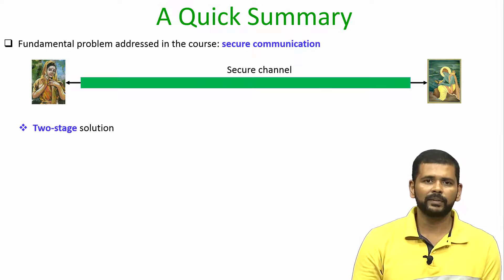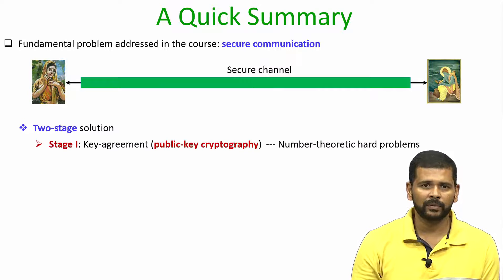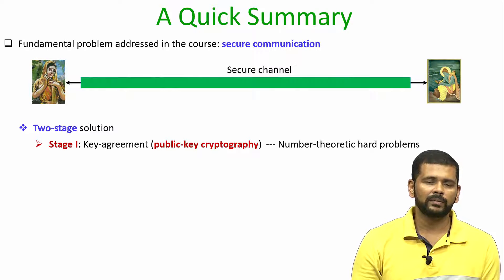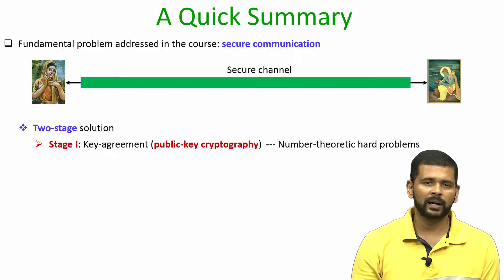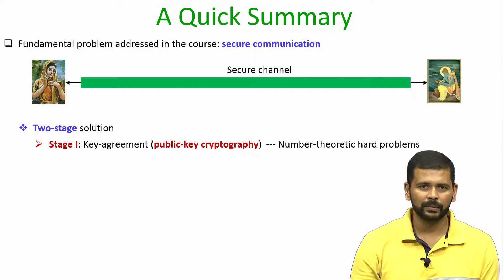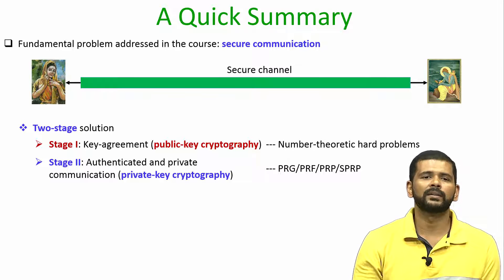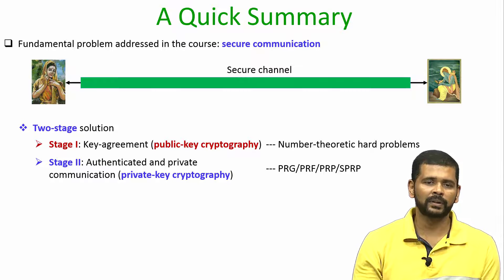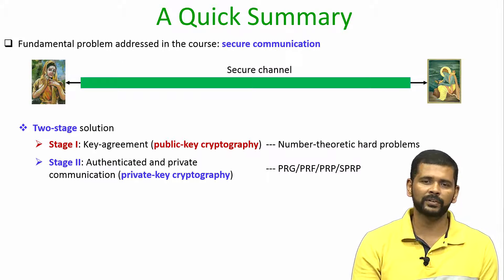We have seen a two-stage solution to solve this problem. In stage one, we solve the key agreement problem using public key cryptography, where the goal of Sita and Ram is to agree upon a common key using number theoretic hard problems and public key encryption. Once the key is agreed upon, in stage two, Sita and Ram perform authenticated and private communication using symmetric key cryptography. For that we introduced several building blocks: pseudo-random generator, pseudo-random function, pseudo-random permutation, and strong pseudo-random permutation.